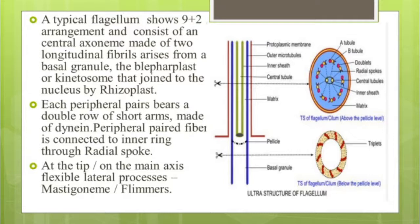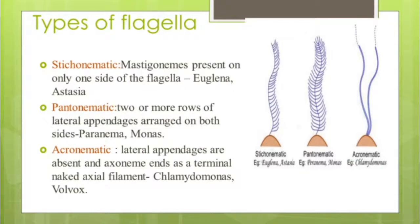At the tip or on the main axis, flexible lateral processes called mastigonemes or flimmers are present. Based on the arrangement of flimmers, there are different types of flagella. Stichonematic flagella have mastigonemes on only one side of the flagellum; this type is observed in Euglena and Aesthesia. Pantonematic flagella have two or more rows of lateral appendages arranged on both sides, observed in Protomonas and Monas. Acronematic flagella have no lateral appendages, and the axoneme ends as a terminal naked axial filament, as seen in Chlamydomonas.